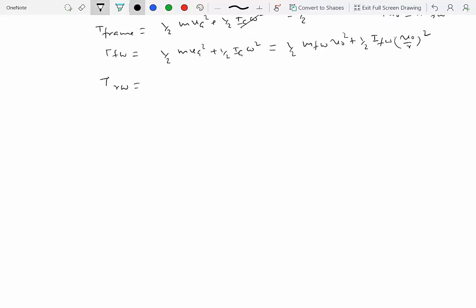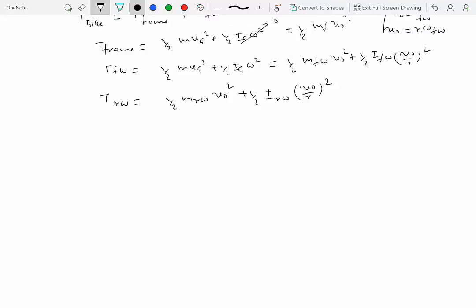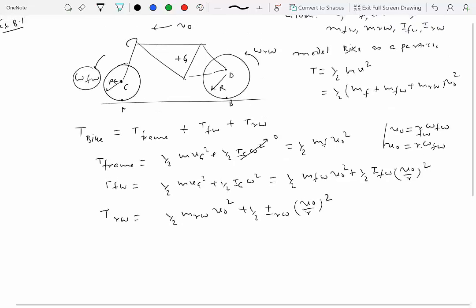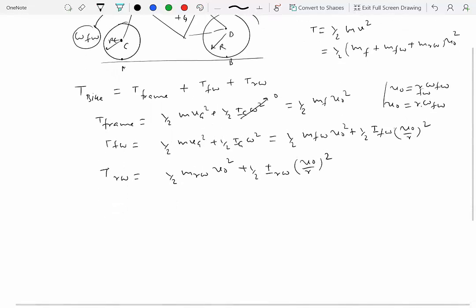Kinetic energy of the rear wheel would be in a similar way, ½ mass of the rear wheel times velocity of the center of mass squared, which is V₀, plus ½I of the rear wheel times the angular velocity, which is same as V₀ over R. So these are the three terms that you will get. And when you add them together, you will get your total kinetic energy of the bike.